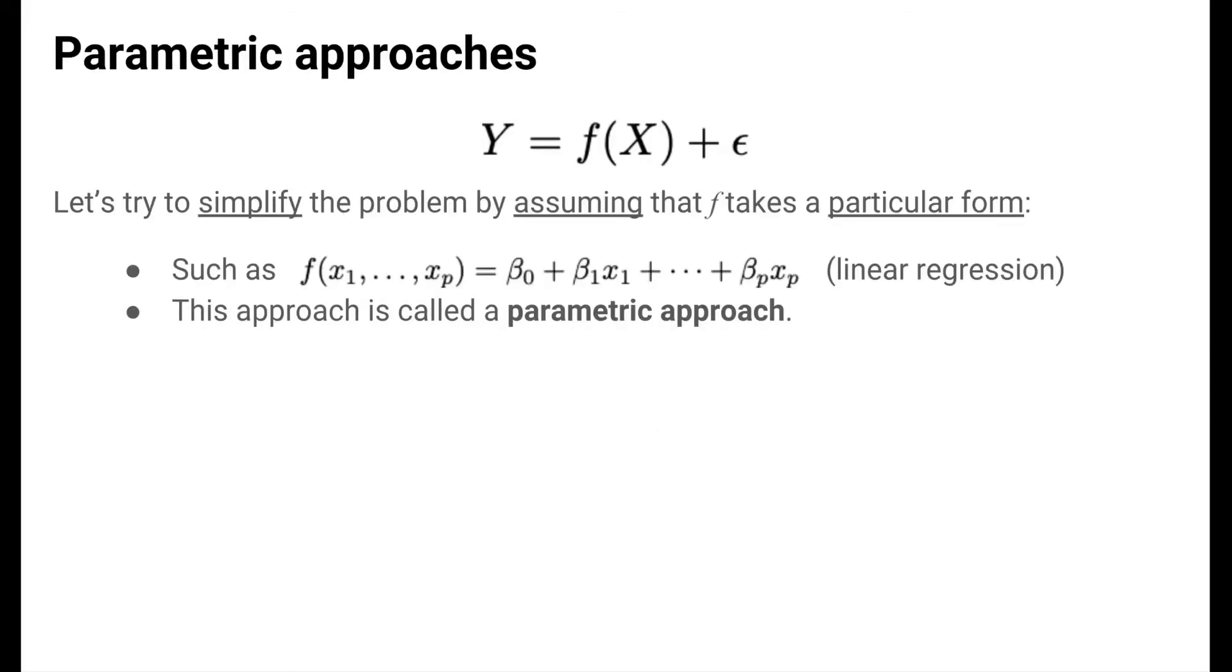In what are called parametric approaches, we make simplifying assumptions about f by assuming that this function takes a particular form. The tool of linear regression, which is what we have been concerned with so far, is an example of a parametric approach. We assume that the function f is this linear combination of the predictors.